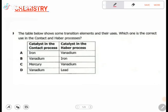The table below shows some transition elements and their uses. Which one is the correct use in the Contact and Haber processes? Before we answer this, what is a Contact process? A Contact process is one which is used in the manufacture of sulfuric acid.